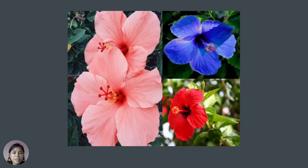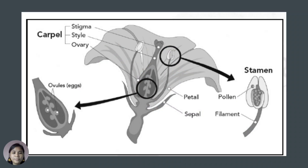Look at our screen — do you know the name of that flower? That is a gumamela. Look at the different parts of a gumamela. We have the carpel: stigma, style, and ovary. We also have the stamen: pollen and filament. And we have ovules for the eggs of the flower.